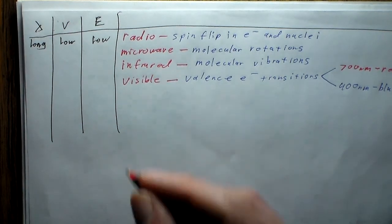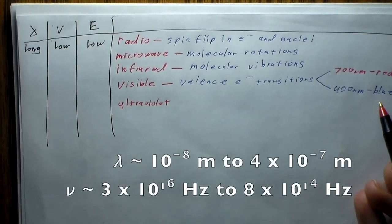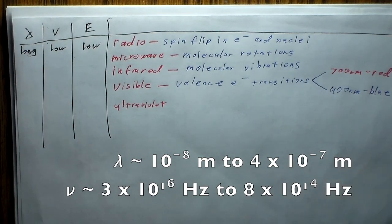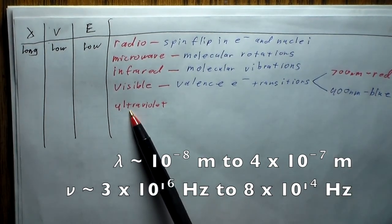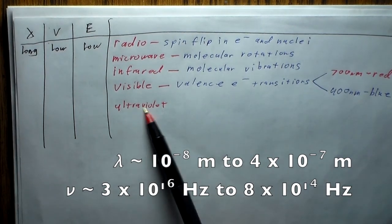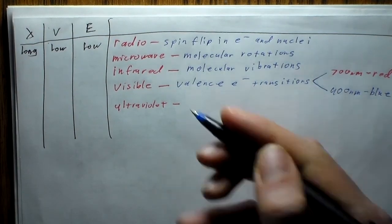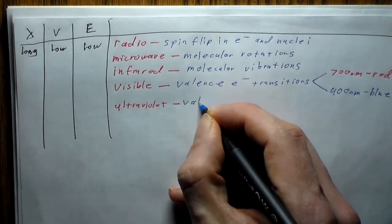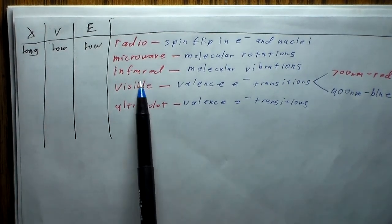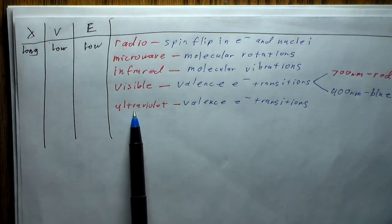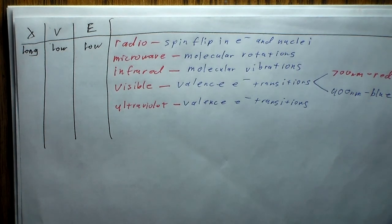Next up is ultraviolet. After blue comes violet, and ultra-violet is just beyond that. It does the same thing as visible light — it's still valence electron transitions. The only difference between visible and ultraviolet is that we can see visible but we can't see ultraviolet, which is why these two regions are split up.